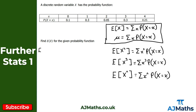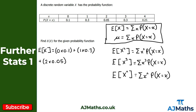I'm looking for the expectation of x, or the mean. Using the formula, I'll do 0 times 0.1 — we just multiply each x value by its probability — plus 1 times 0.3, plus 2 times 0.05, plus 3 times 0.3, and finally 4 times 0.25.